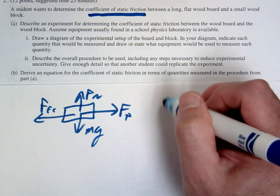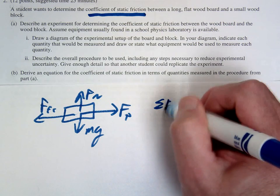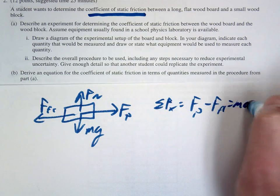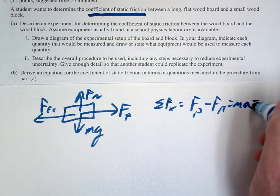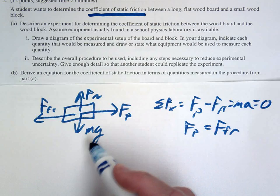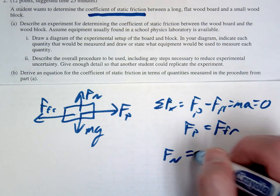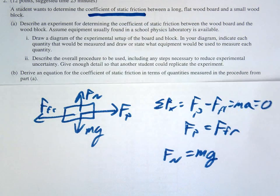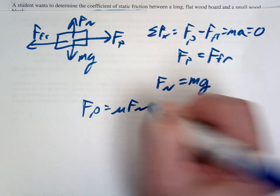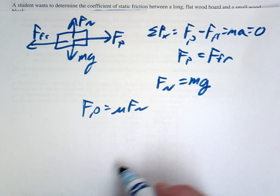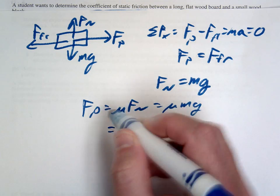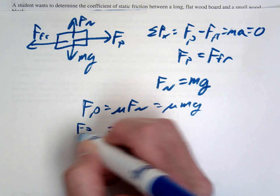If we do our summation here we're going to have F pull minus friction equals MA. Since it is a static case this would just be equal to zero. So our F pull should equal our friction. Likewise, our normal force is going to have to be the same as gravity. So if we keep going, our F pull should equal mu times FN. And since FN is going to be MG, you should get mu equal to our F pull divided by MG.